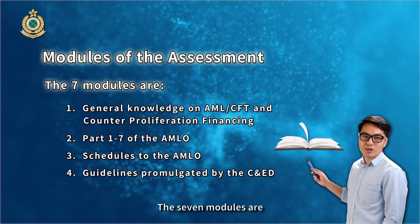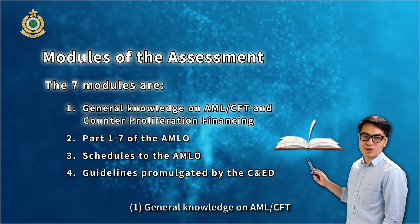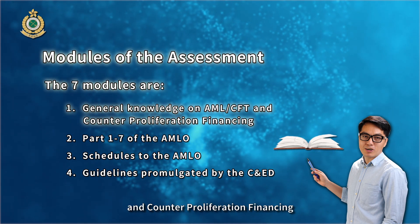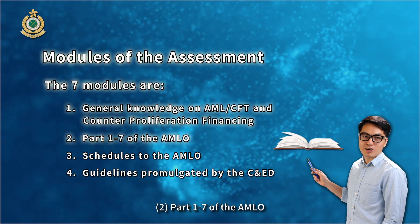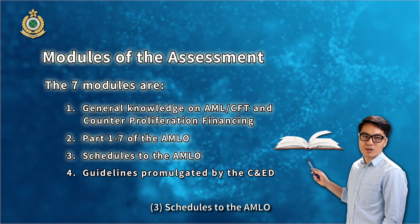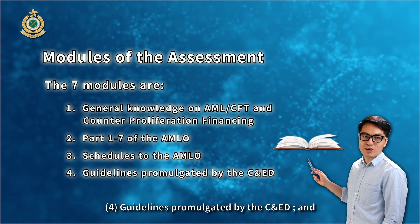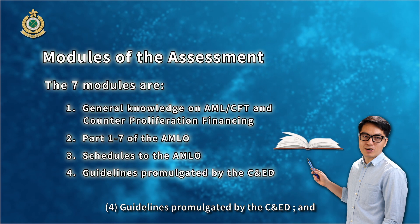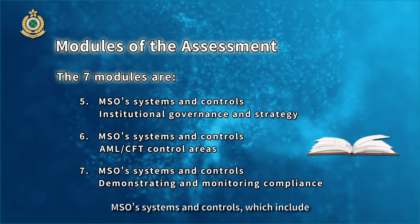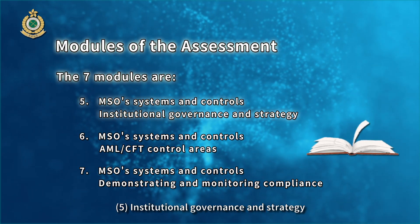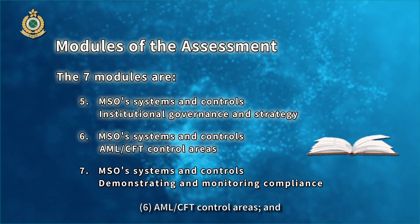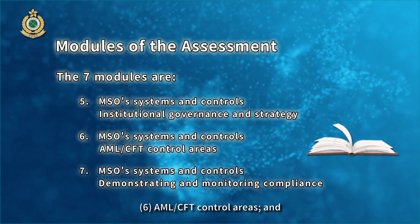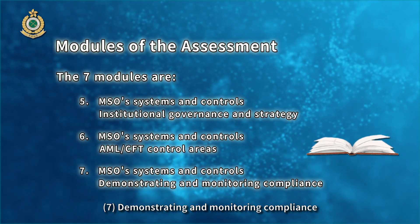The seven modules are: 1. General Knowledge on AML-CFT and Counter-Proliferation Financing; 2. Parts 1–7 of the AMLO; 3. Schedules to the AMLO; 4. Guidelines promulgated by the CNED; and MSO's Systems and Controls, which include: 5. Institutional Governance and Strategy; 6. AML-CFT Control Areas; and 7. Demonstrating and Monitoring Compliance.